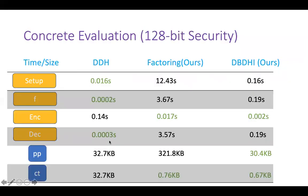We implemented our constructions and measured runtimes for 128-bit security. We optimized for encryption time and ciphertext size, and our constructions perform well. The DDH construction encryption time is 1.014 seconds, whereas our pairing-based construction takes 0.002 seconds — 70 times faster. The DDH ciphertext size is 32.7 kilobytes, whereas ours is 0.67 kilobytes — a 50 times improvement. The time taken by other algorithms is slightly higher than the DDH construction, so there is a reasonable trade-off. You can choose which construction to use depending on the application.